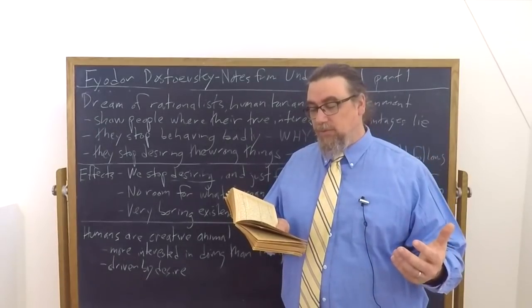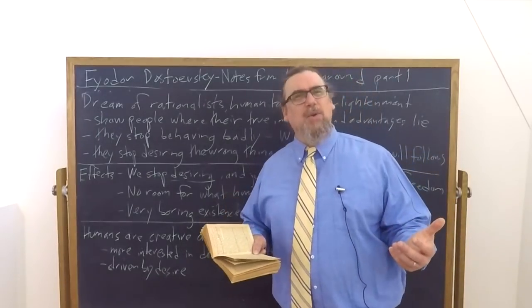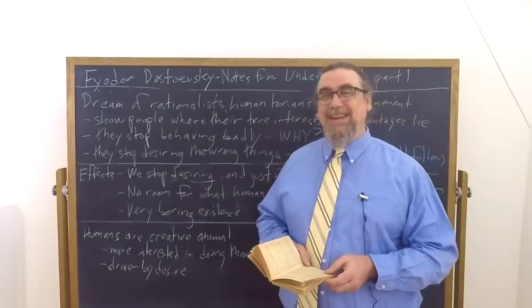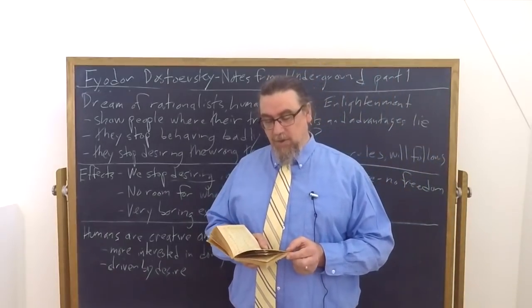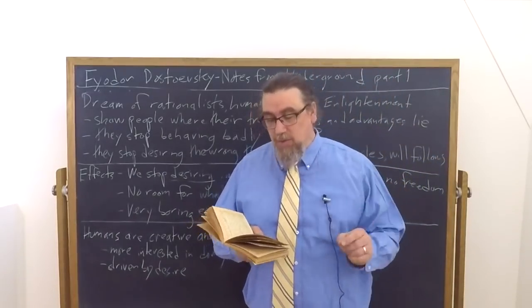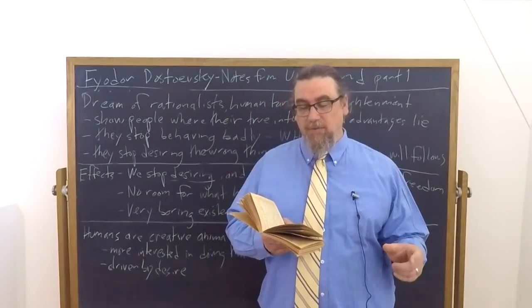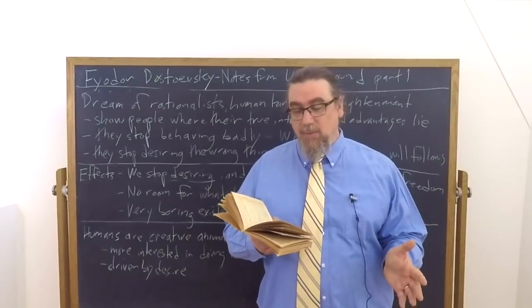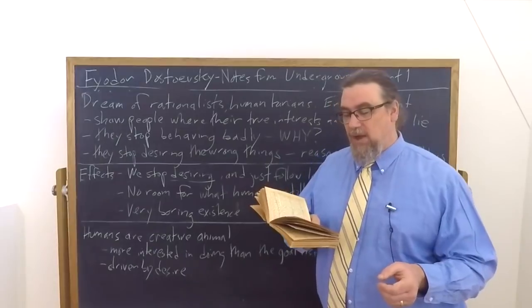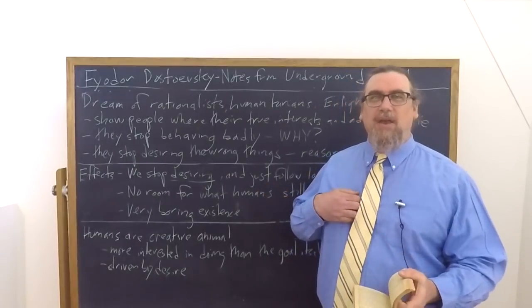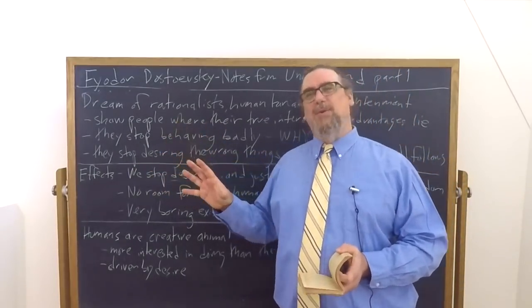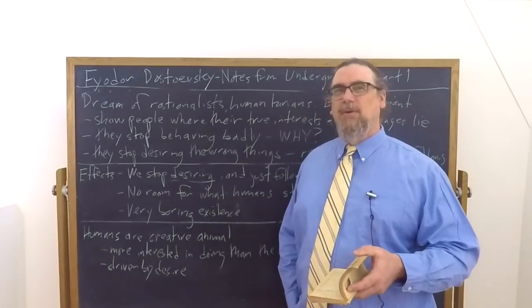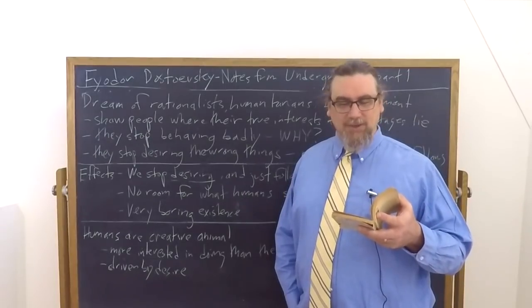Why then do we like chaos and disorder and destruction? He says, well, perhaps it's because we're instinctively afraid of reaching the goal that we are working for. How do you know, perhaps, that he likes his objective only from a distance? Perhaps he only likes to contemplate it and not to live in it, preferring to leave it when it comes down to it, to animals such as ants, sheep, and such. Ants are different. They have their anthill and they follow their programming and they do it real nice. But we're not ants. We're not simply programmed devices or animals.